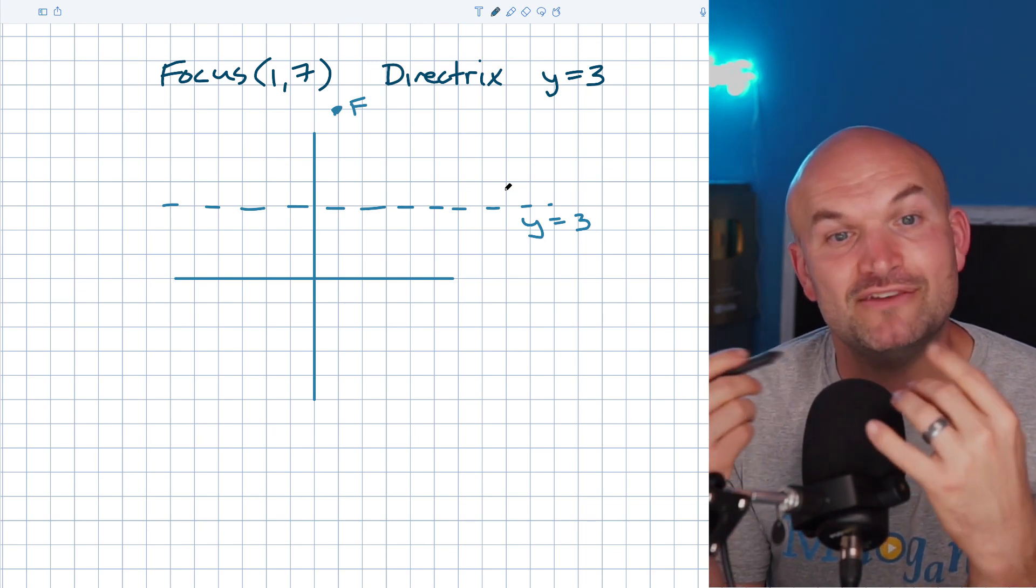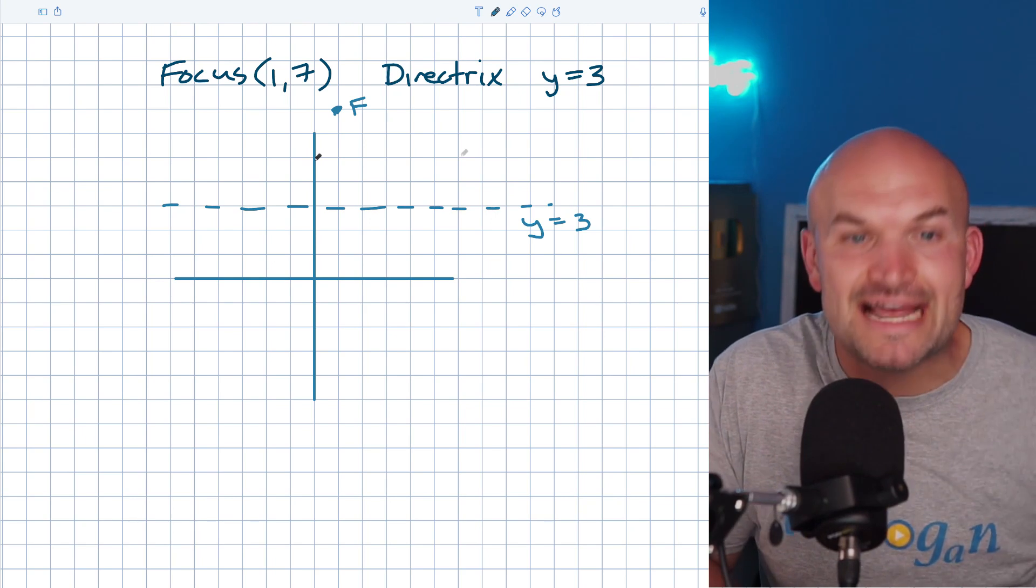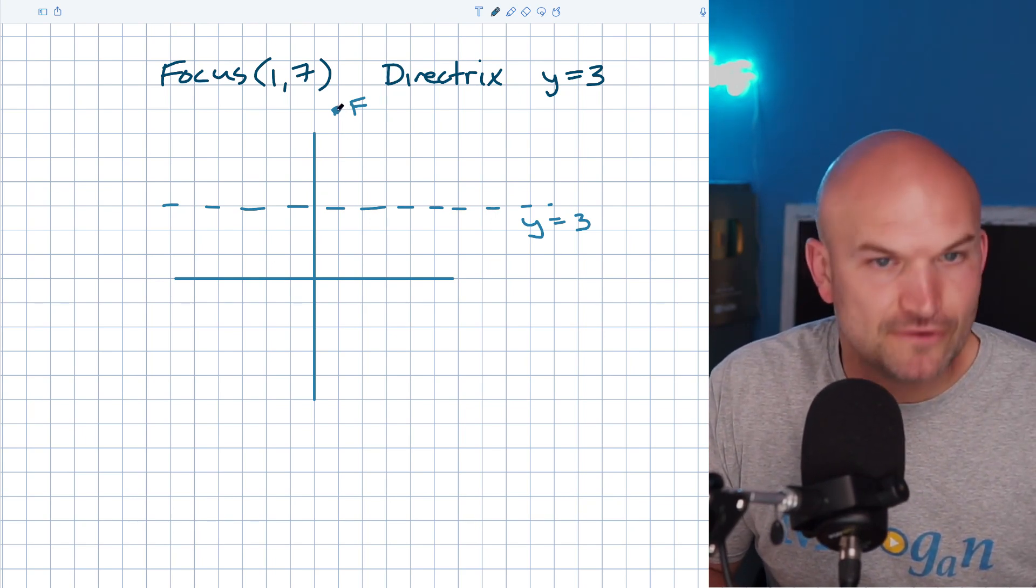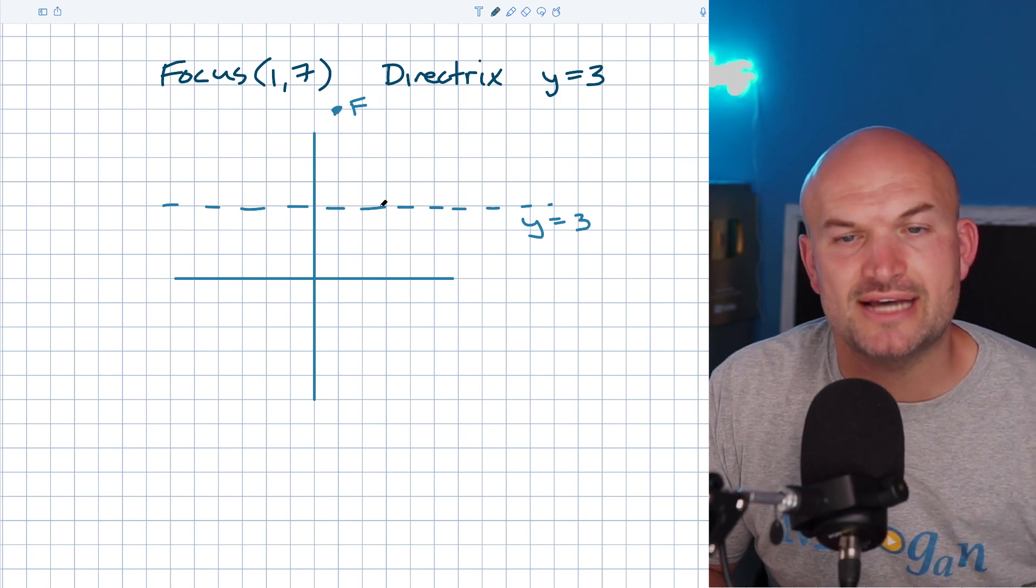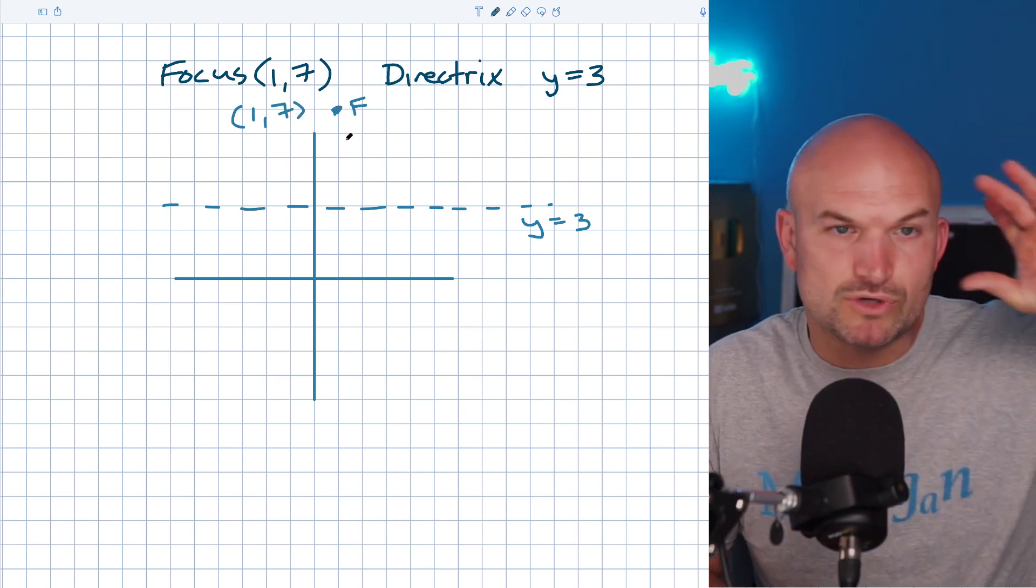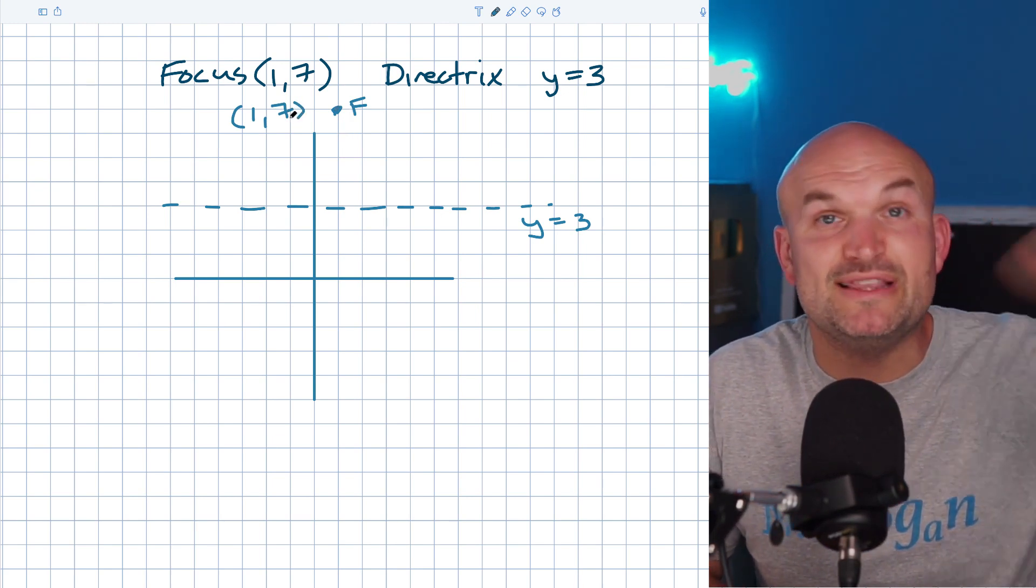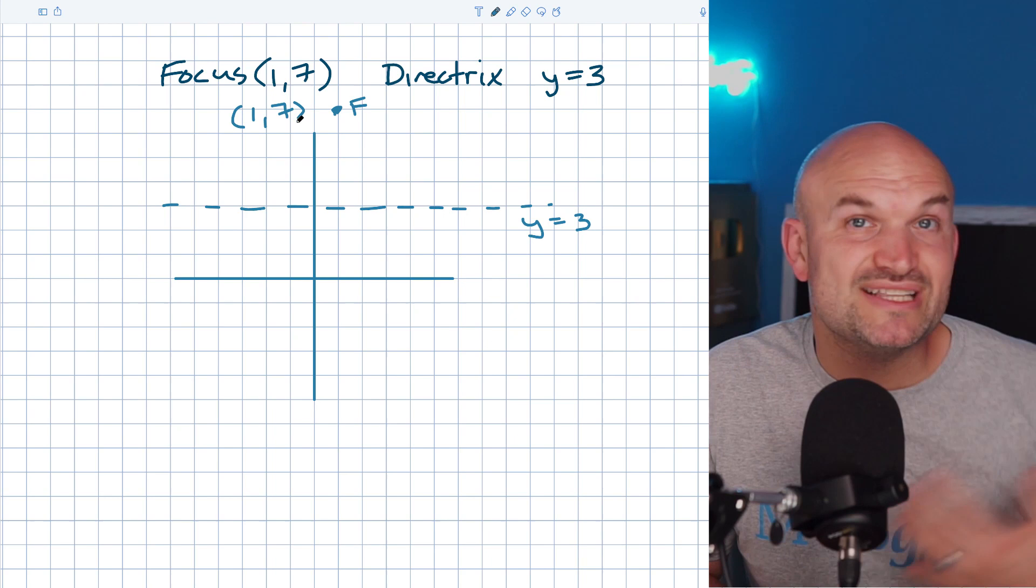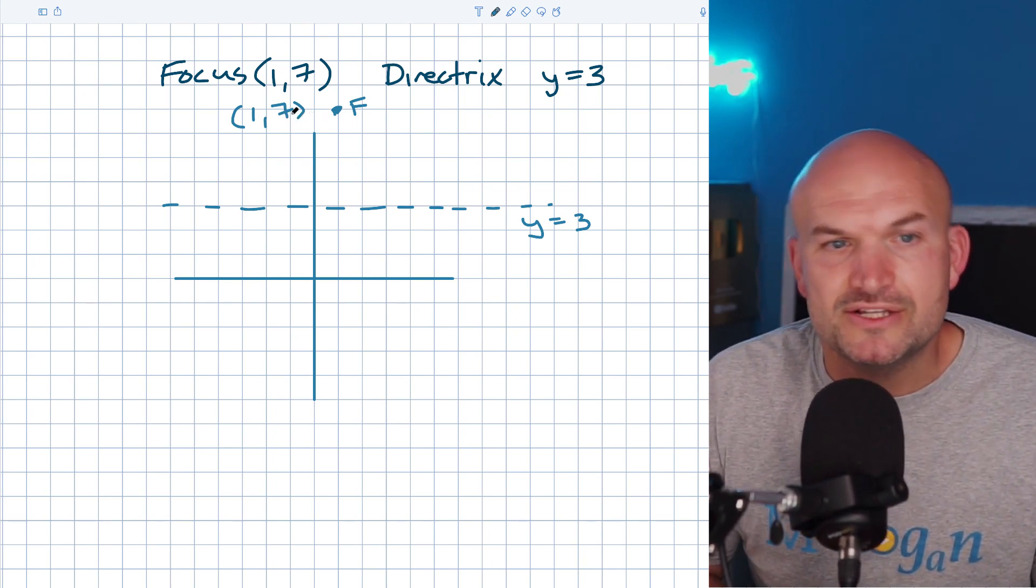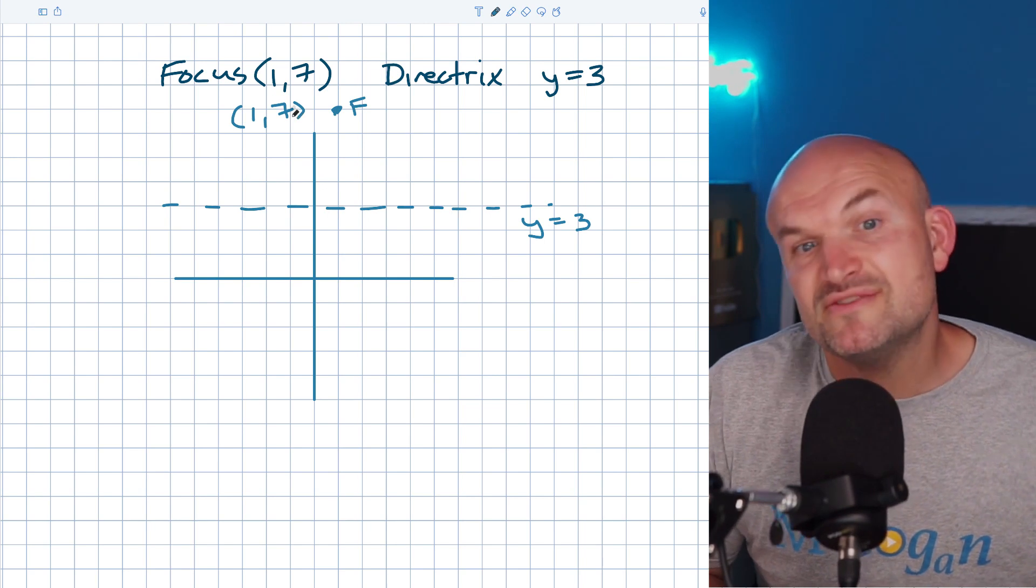The vertex is exactly in the center between our focus and our directrix. The focus is a point and the directrix is a line, but we're trying to find the middle between the y values. You could use the distance formula or find the midpoint: seven plus three.